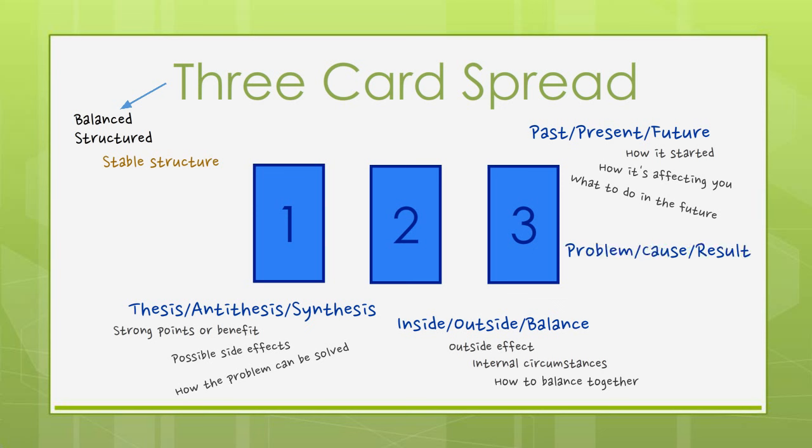Problem, cause, result. Given a problem, you come to think of the nature of the problem first, find out the root of the problem, and then expect what will become of the situation.